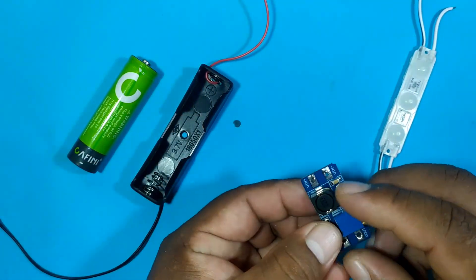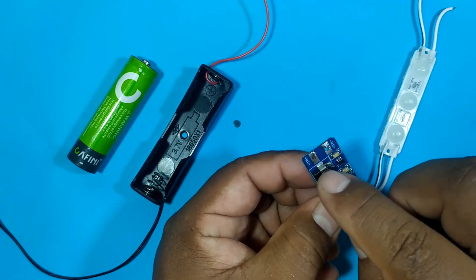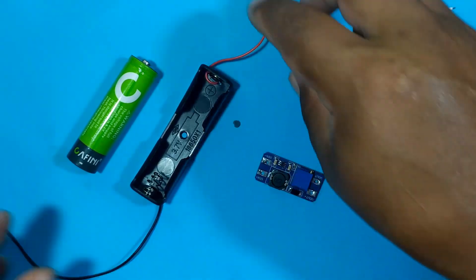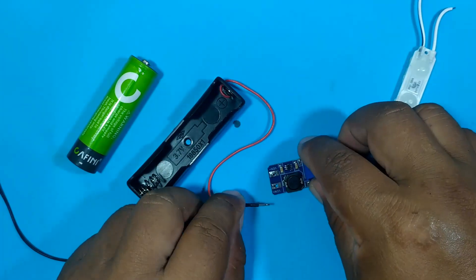Well first we are going to solder what would be the voltage input. We have positive voltage input and negative voltage input. We solder the cables of our battery.